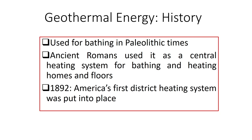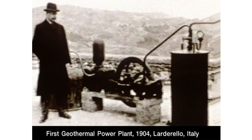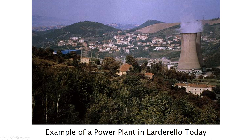Let us have a look at the history. Geothermal energy was used for bathing in Paleolithic times. The ancient Romans used it as a central heating system for bathing and heating homes and floors. In 1892, America's first district heating system was put into place. Then in 1904, the first geothermal plant was installed in Italy, at a place called Larderello. Today, you can see the same plant still operating in Italy.